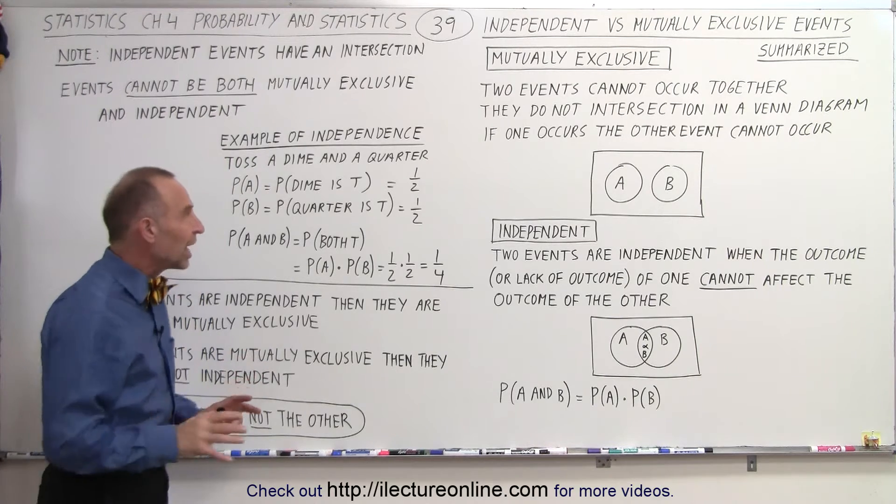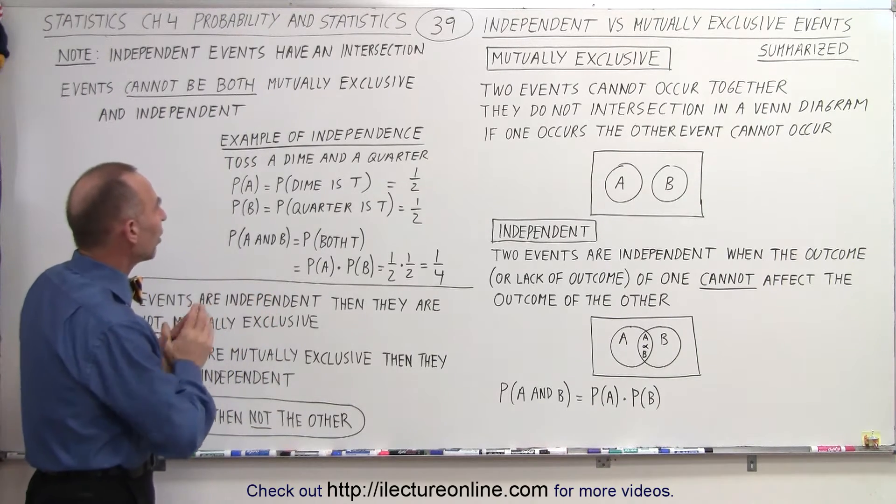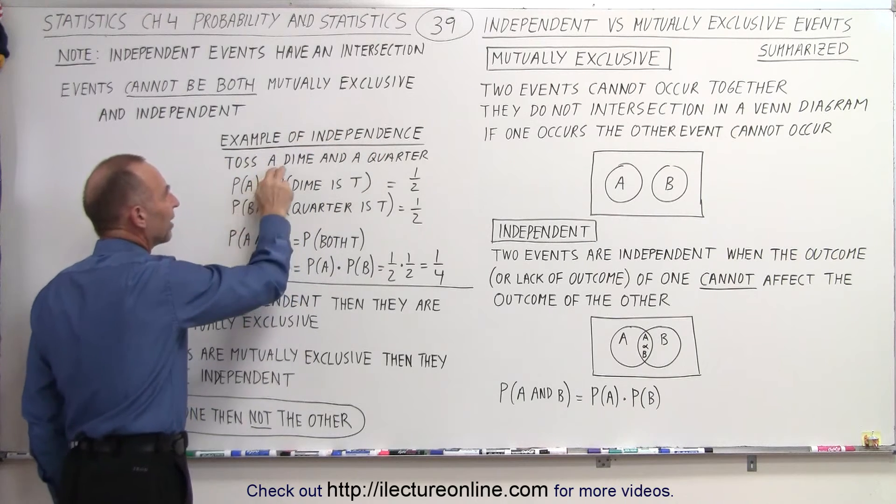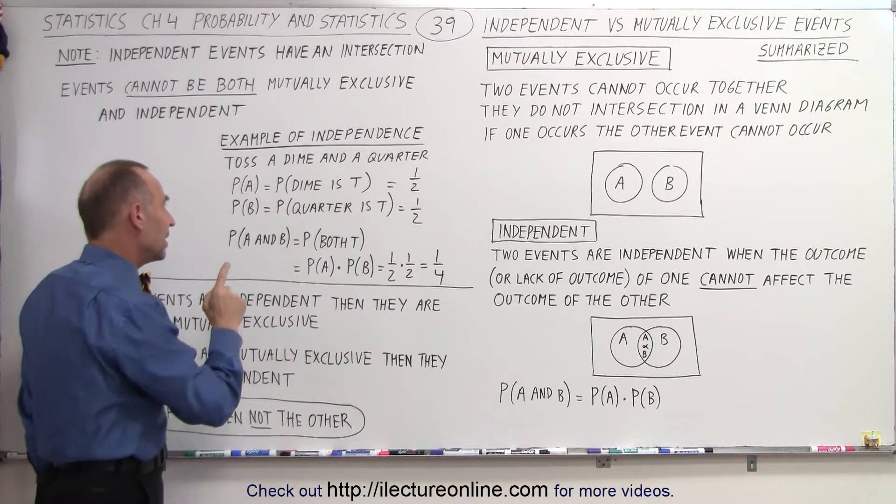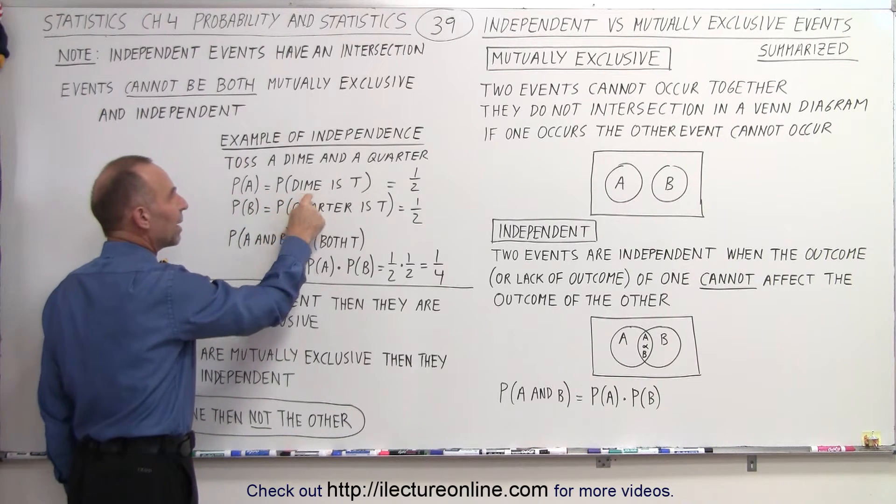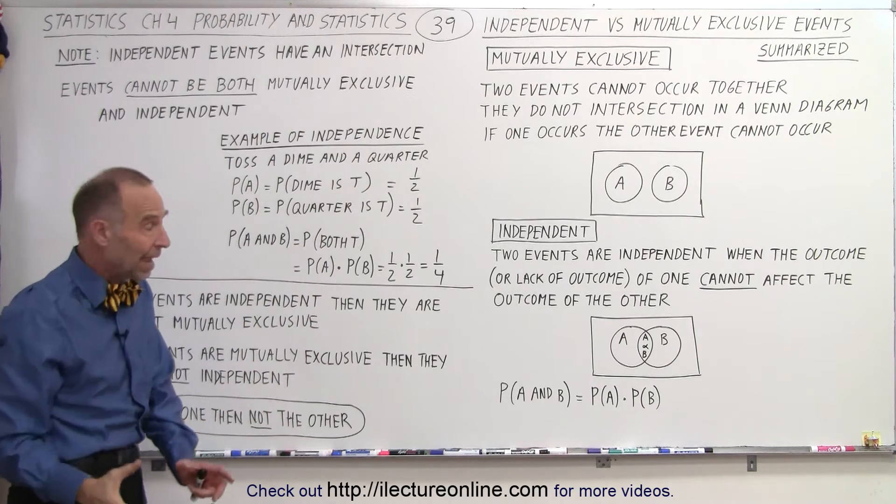To help us understand what independent events are, let's take a look at the example of independence. Let's say we toss a dime and a quarter. That means, then, that the probability of A will equal the probability that the dime is tails. And, of course, that's equal to one half.